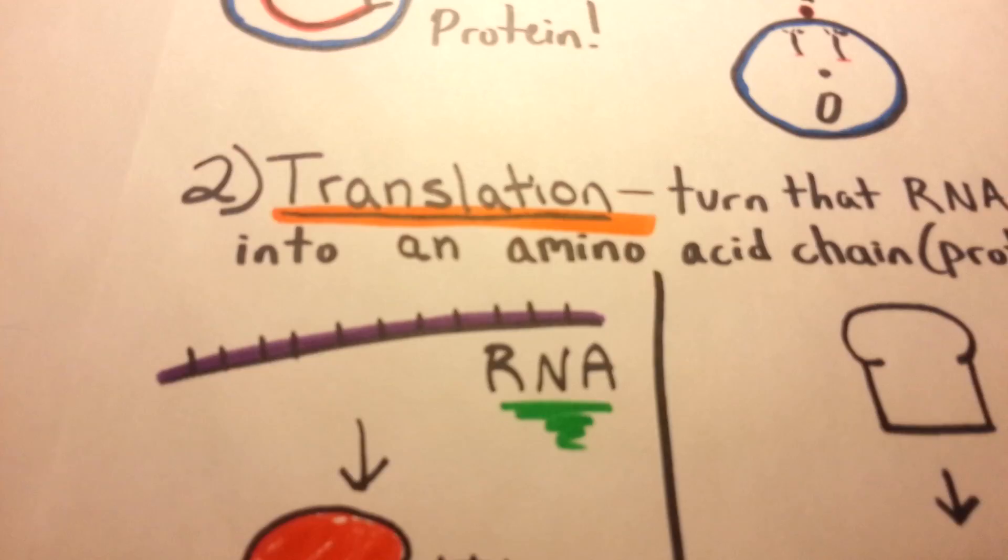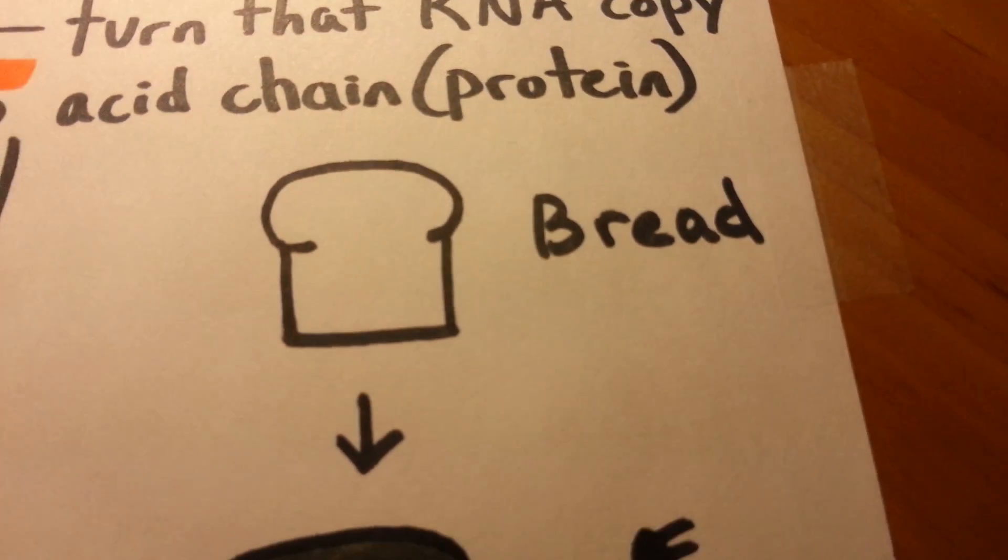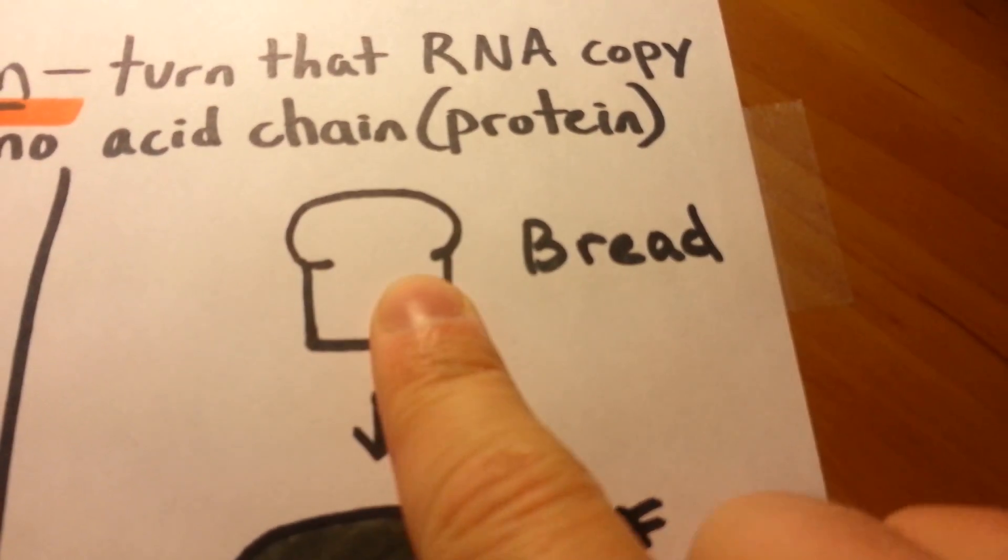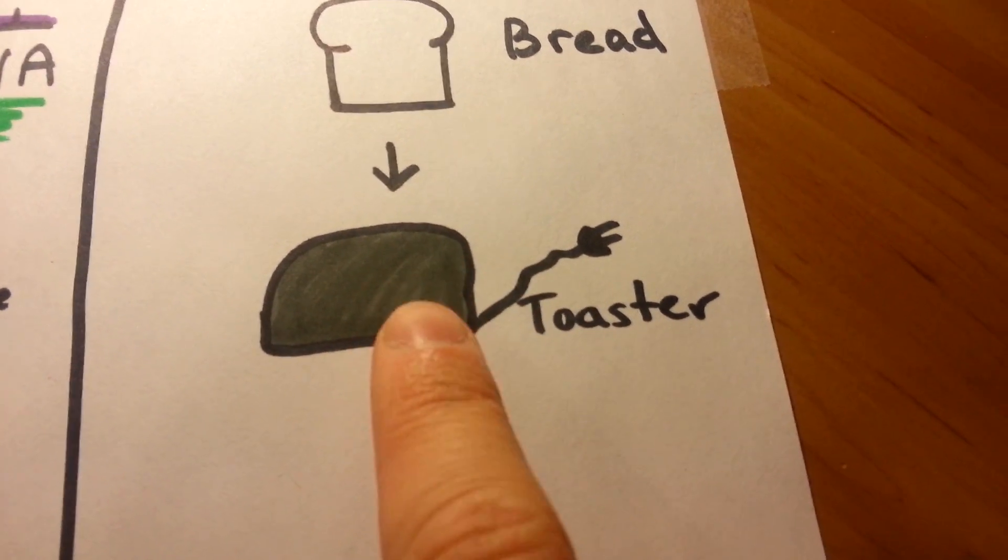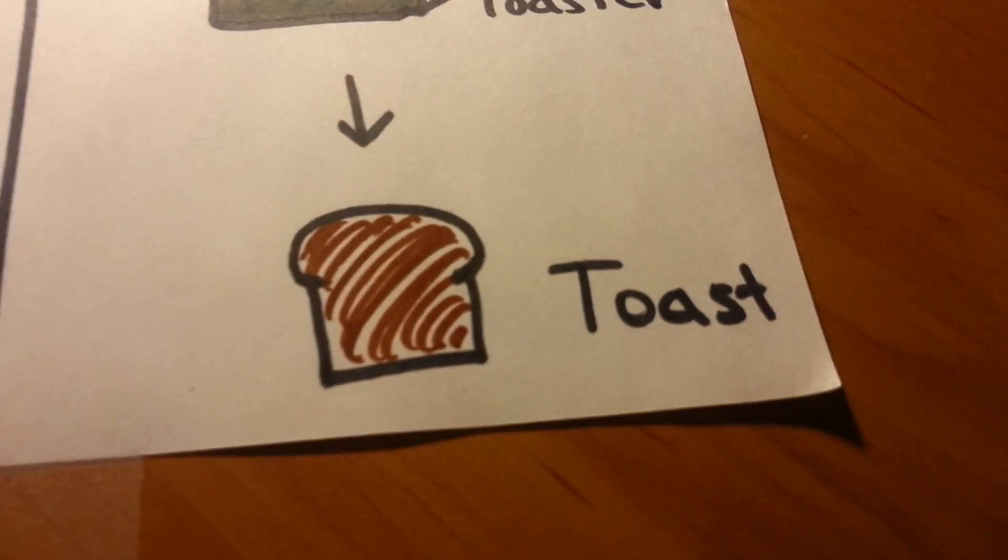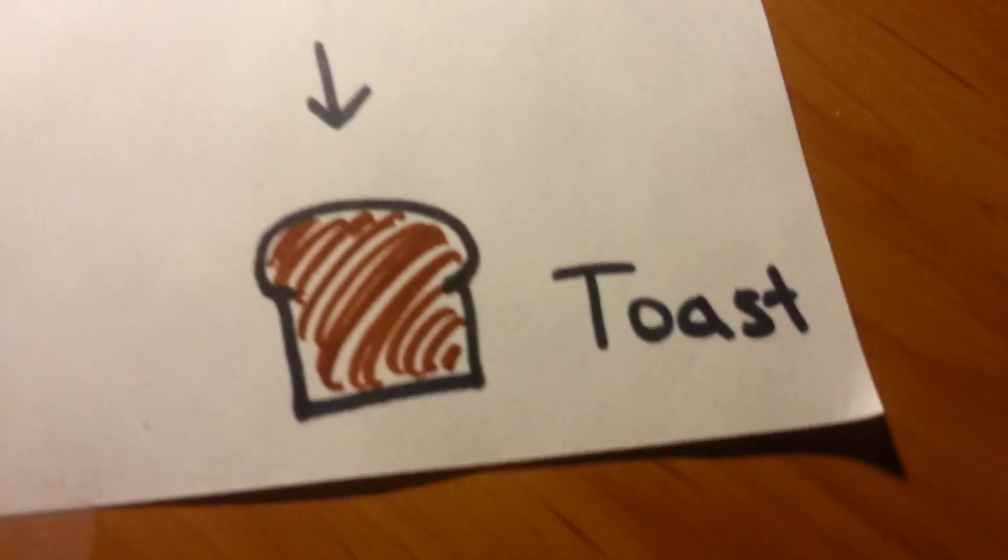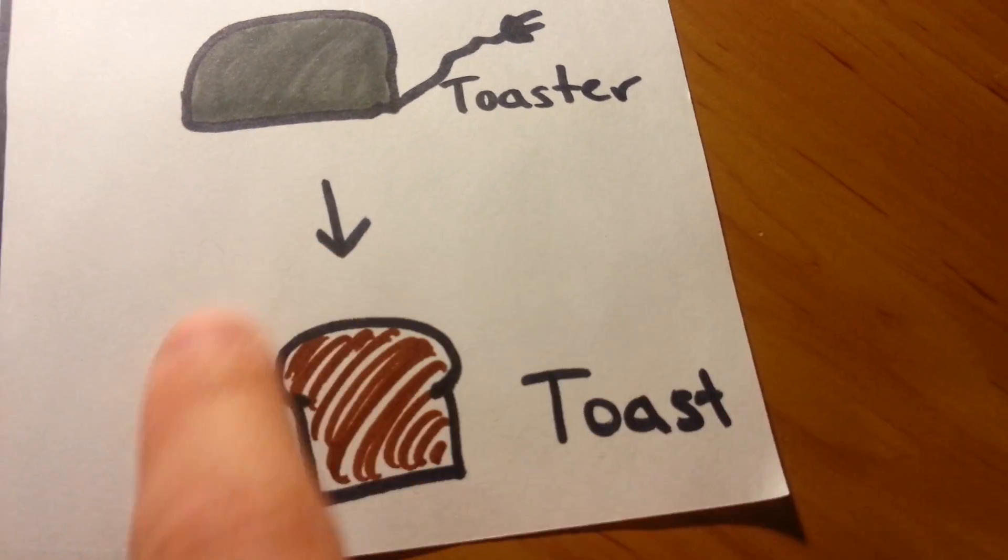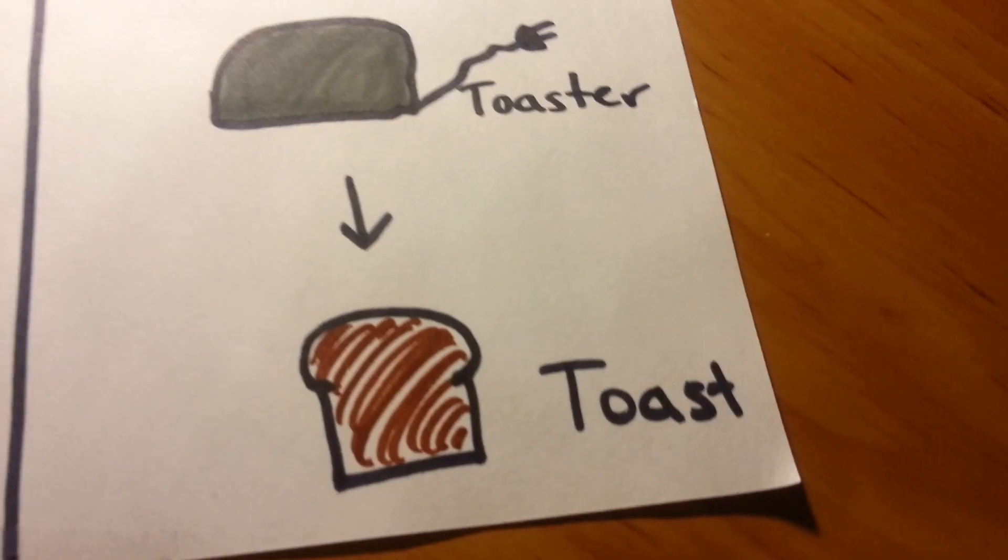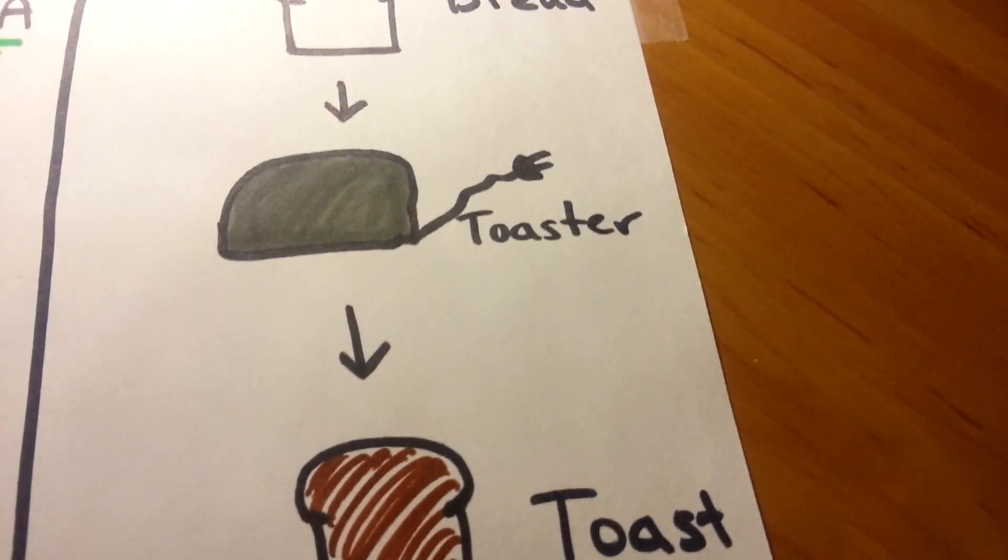You can sort of think of it like this. We have bread, this would be the RNA. We're going to run it through a toaster. This is the ribosome right here. And boom! We're left with toast, which is a little bit different than our original thing. And so this would be our amino acid chain, which is a different thing than what we began with.